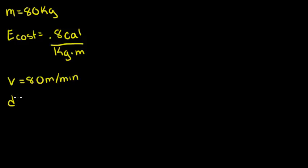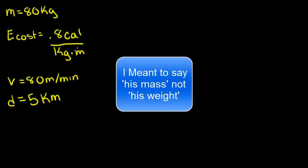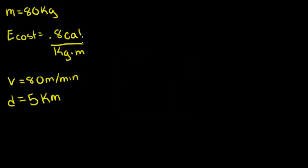The distance is 5 kilometers. This energetic cost shows that he loses 0.8 calories for every kilogram of his weight for every meter he walks. First, let's figure out the number of calories per meter he will burn for his entire body.